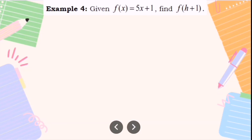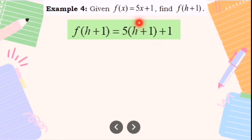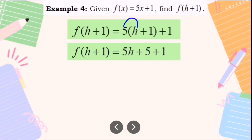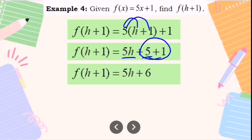Another example: given f(x) equals 5x, find f(h plus 1). Substitute h plus 1 for x: f(h+1) equals 5 times (h plus 1). Use the distributive property: 5 times h equals 5h, and 5 times 1 equals 5. Combine like terms: 5h plus 5 plus 1 equals 5h plus 6. The final answer is 5h plus 6.